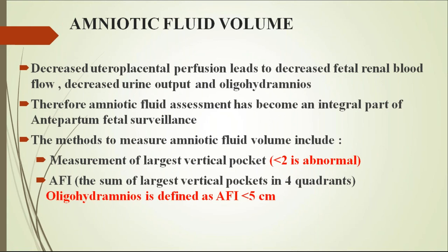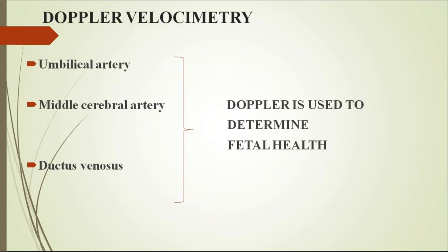Amniotic fluid assessment: decreased uteroplacental perfusion leads to decreased fetal renal blood flow, decreased urine output, and ultimately oligohydramnios. Therefore, amniotic fluid assessment has become an integral part of fetal surveillance. Assessment methods: single largest pocket less than 2 cm is abnormal (oligohydramnios); or amniotic fluid index (AFI) less than 5 cm — calculated by adding the four quadrant measurements — also indicates oligohydramnios.